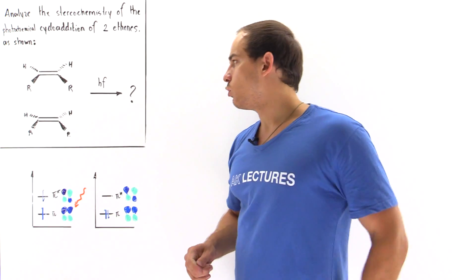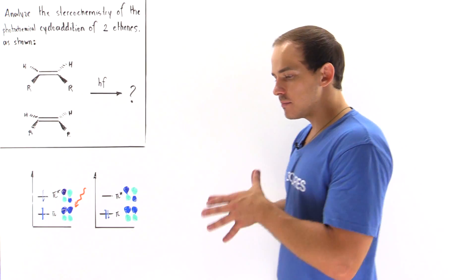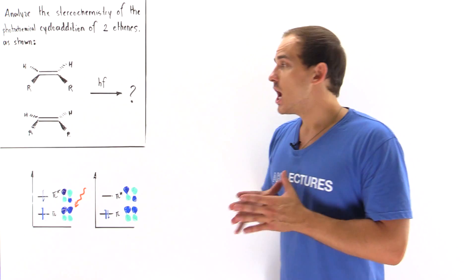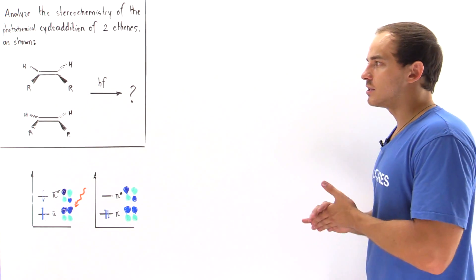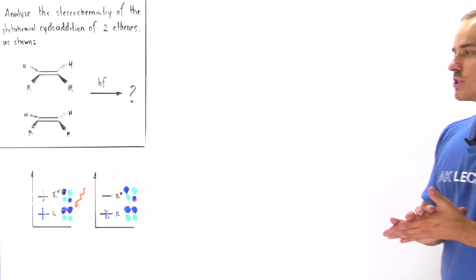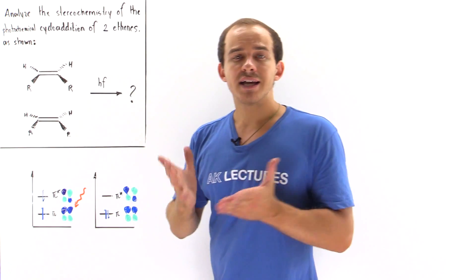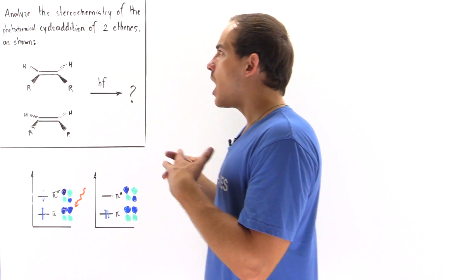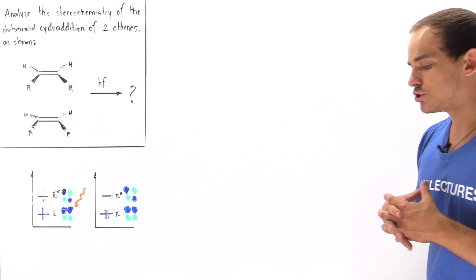Let's analyze and determine the stereochemistry of the products formed in the photochemical cycloaddition of two cis alkenes — two cis ethene molecules that each contain identical R groups in cis fashion. The first step is to determine the highest occupied molecular orbital (HOMO) and the lowest unoccupied molecular orbital (LUMO) under photochemical conditions, meaning we use light as our energy source.